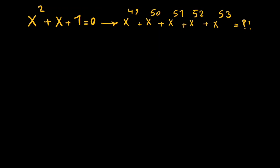Welcome to Math with Market. Today we're going to solve a really nice problem from the Singapore Math Olympiad. If x squared plus x plus 1 equals 0, we want to find x to the power of 49, 50, 51, 52, and 53, given that x is a real number.